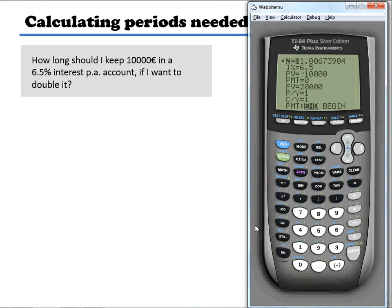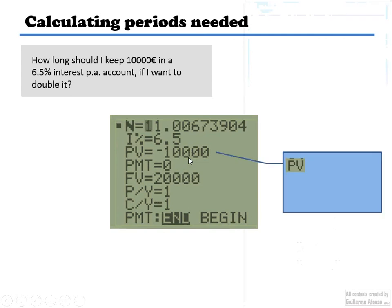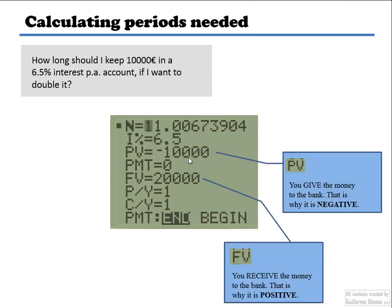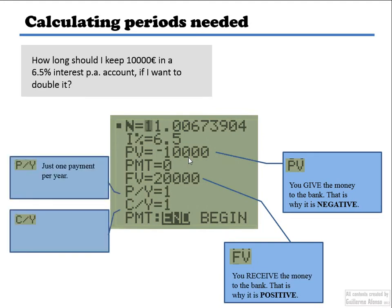And I go up to the N and I press alpha and enter. So it's basically I'm pressing solve. And I get 11.006 compounded in 11.006 periods. Now it's not compounded, right? Since it's going to be, if it's 11, it's going to be just underneath double what I want. So the answer is going to be 12.